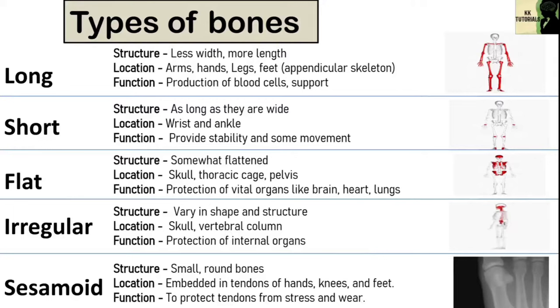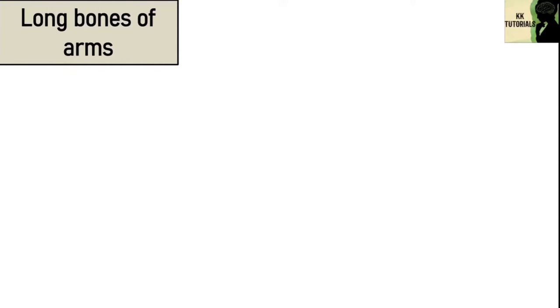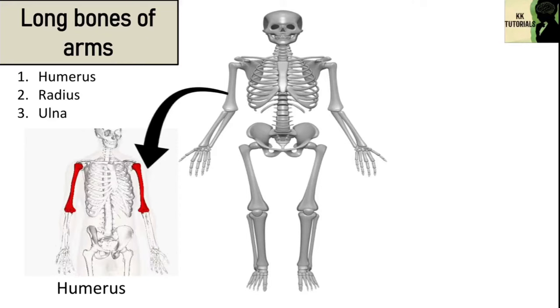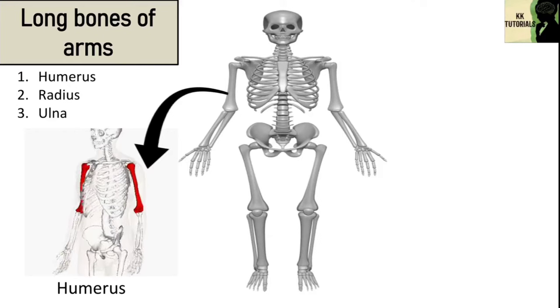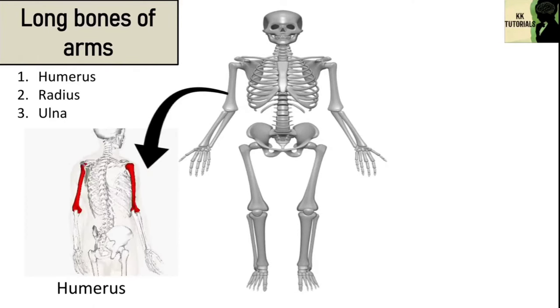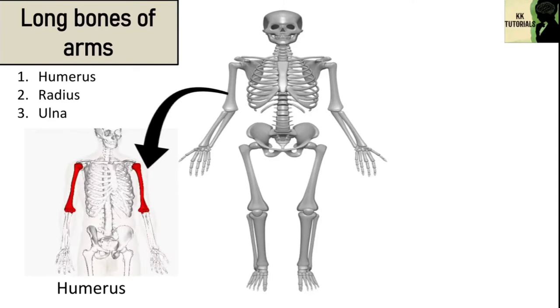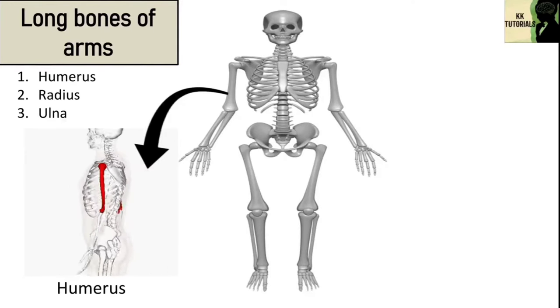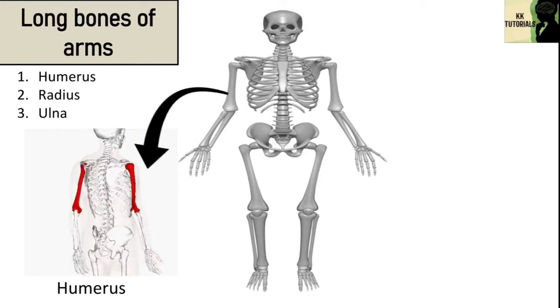Now let's see the location of different types of bones in our body, starting with the long bones. Long bones are found in the arms, hands, legs and feet. Your arm is made up of three bones. The arm is located between your elbow and your shoulder and consists of several parts that allow it to move freely in different directions. The humerus is the longest bone in your arm, and its two important functions are movement and support. In addition to being crucial for various arm movements, the humerus serves as a connection point for muscles in your shoulder and arm.